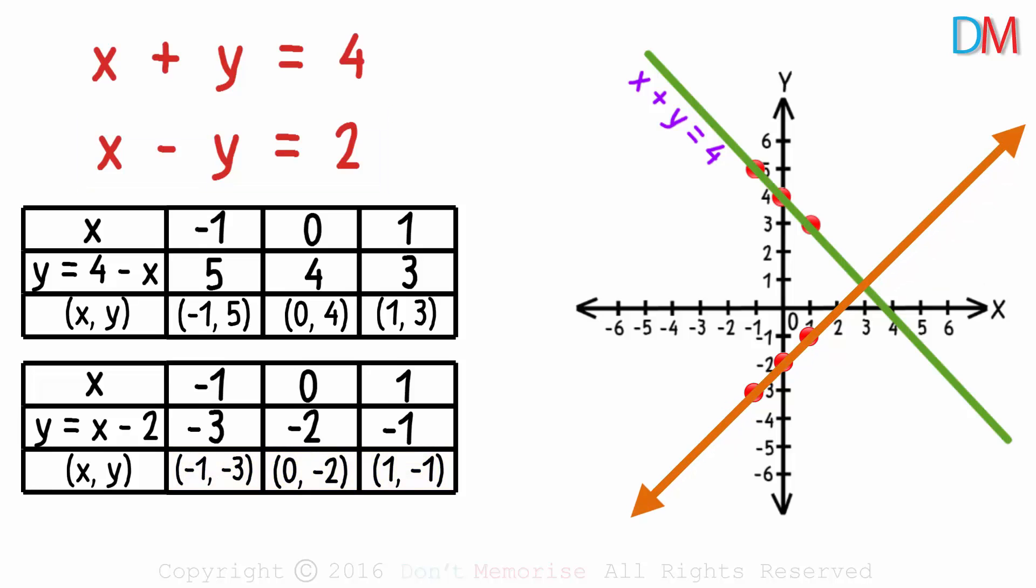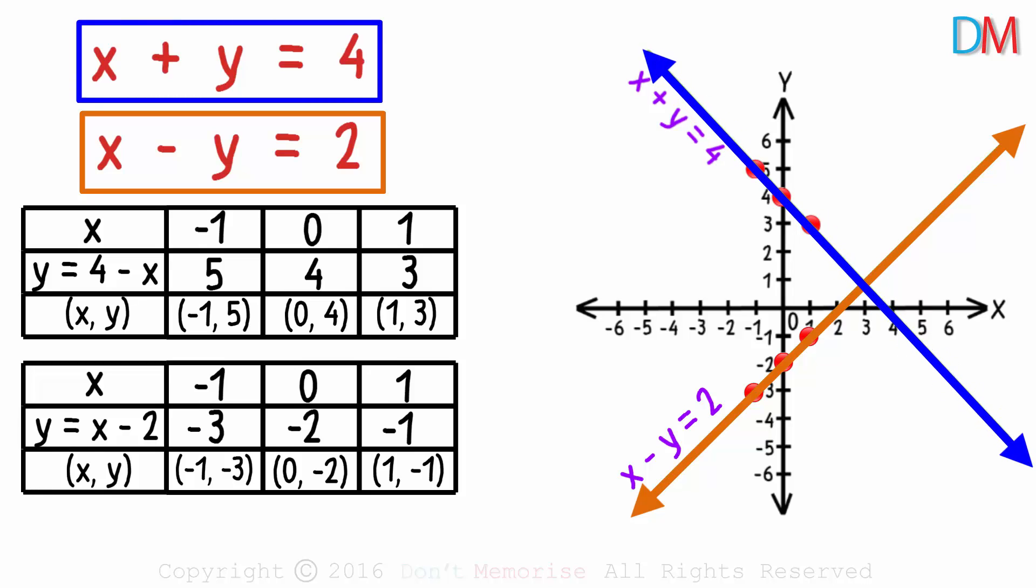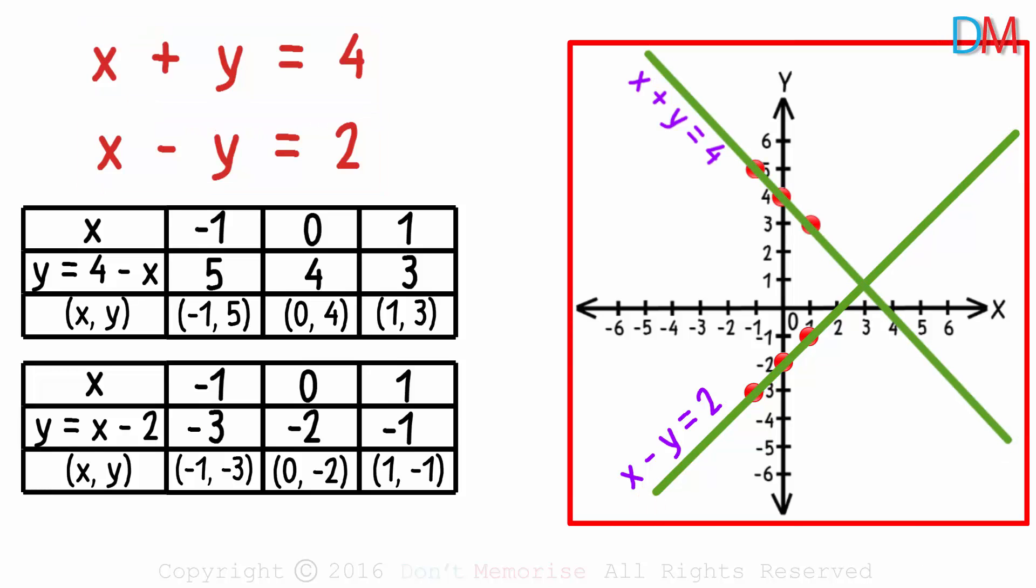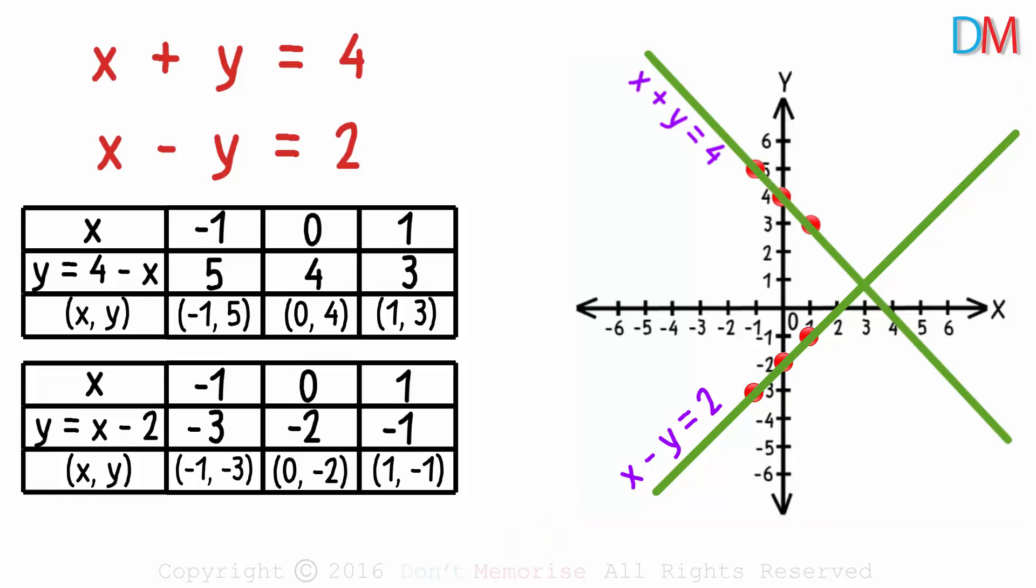This line represents the equation x minus y equals 2, and the previous one represents x plus y equals 4. Now look at this graph and tell me what all can you deduce? Let's talk about the things we discussed in the previous video.